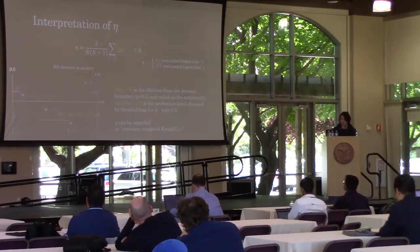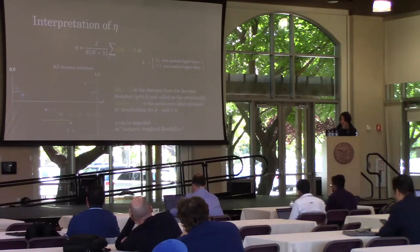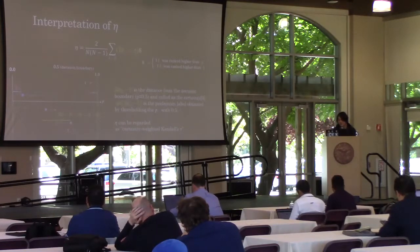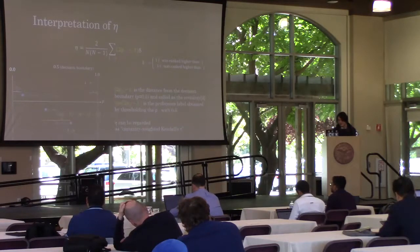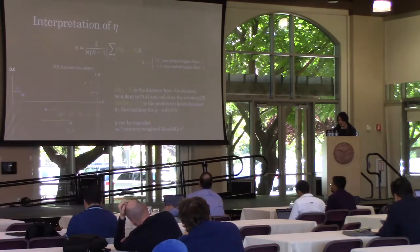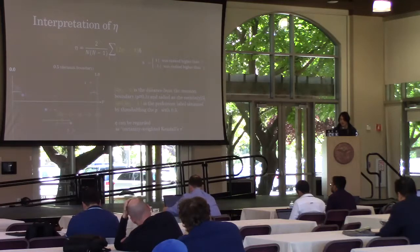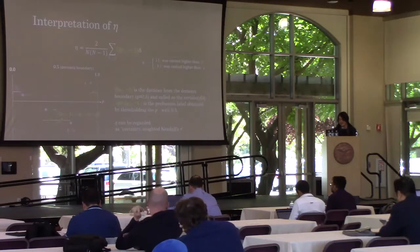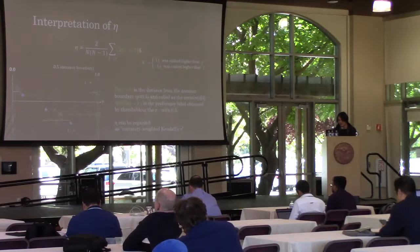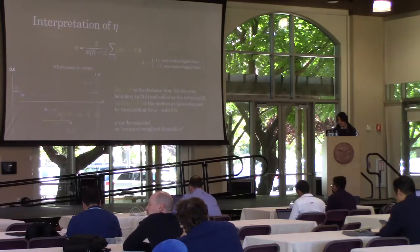This is an interpretation of the eta measure. The term 2pij minus 1 is quite interesting. The sign of this term is the preference labelers give when the decision is performed at the discordant boundary p equal to 0.5.